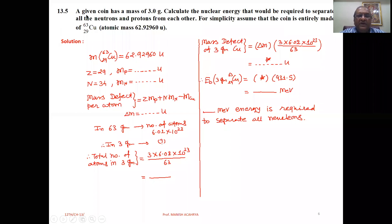A given coin has a mass of 3 grams. Calculate the nuclear energy that would be required to separate all the neutrons and protons from each other. For simplicity, assume that the coin is entirely made of Cu-63 with atomic mass 62.92960 U.